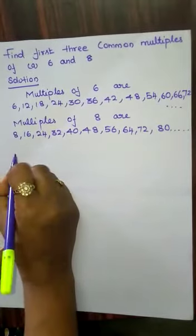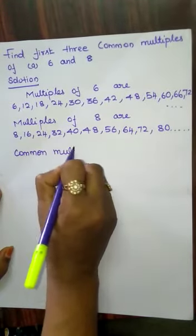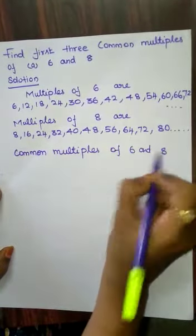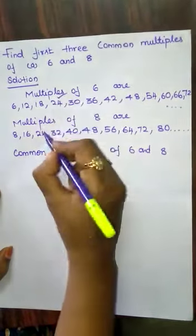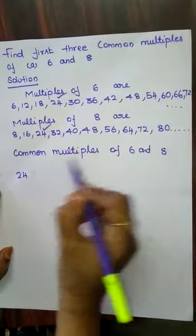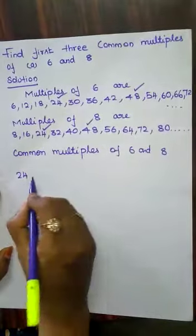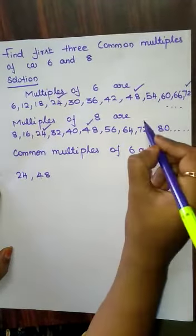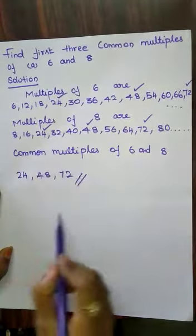Now we have to select the common multiples of 6 and 8. The first three common multiples are 24, 48, and 72.